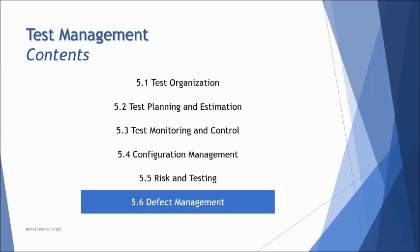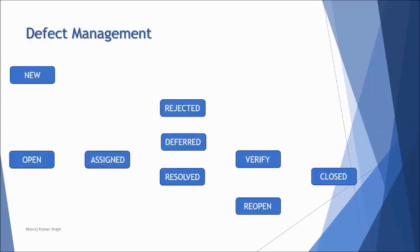Before we get started, we have learned about the defect in chapter one — what exactly a defect is, which is a deviation from the expected result. Generally, we have certain requirements given to us, and as we test each requirement we find certain deviations, and these deviations are called defects, which need to be analyzed and corrected or fixed.